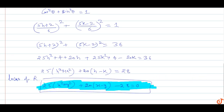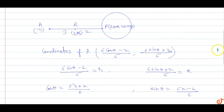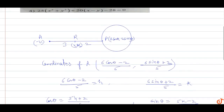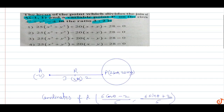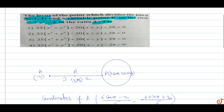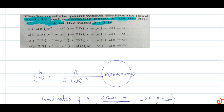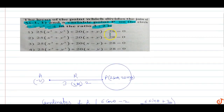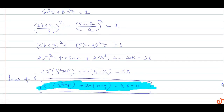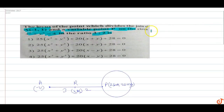So this is the answer for this question. The locus of R, which divides AP in ratio 3:2, where P is a variable point on the circle x² + y² = 4, is: 25(x² + y²) + 20(x − y) − 28 = 0. So option 4 will be the correct option.